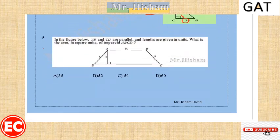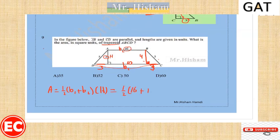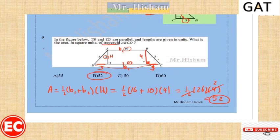Question nine: it's a trapezoid and we need the area. Area of a trapezoid is half the sum of the two parallel bases multiplied by the height. The height is 4, and base two is 10. To find base one, draw a perpendicular from B, forming a 3-4-5 right triangle, so that segment is 3. Therefore base one is 16. Area = half of (16 + 10) times 4 = half of 26 times 4 = 52.